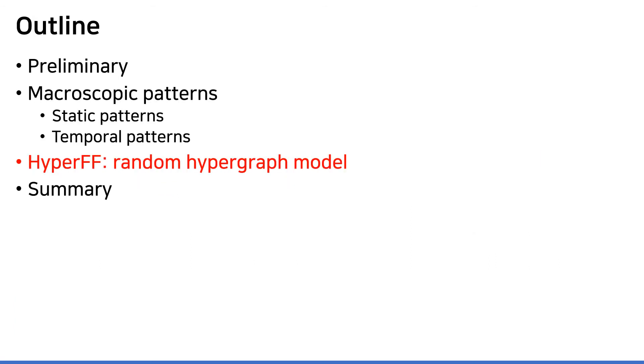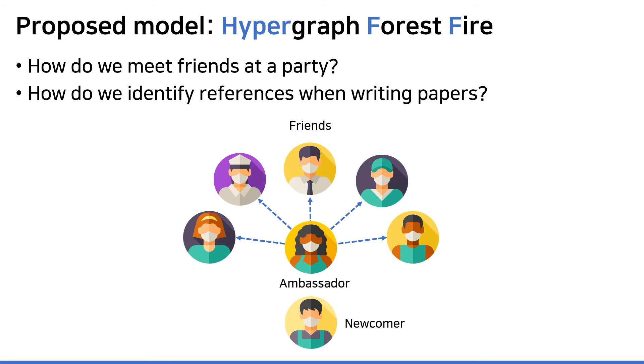Along with these established patterns in real-world hypergraphs, we go further by proposing a growth model to explain what local dynamics cause these static and temporal patterns. We propose a model called Hypergraph Forest Fire, which adopts a forest fire scheme to generate hyperedges. In essence, when a new node arrives, fire is randomly spread through existing hyperedges, so that it decides the new node's neighbors. And then, our model simulates the forest fire again to extend each created hyperedge. To regulate this dynamic, we only need two probability parameters, which are burning probability and expanding probability.